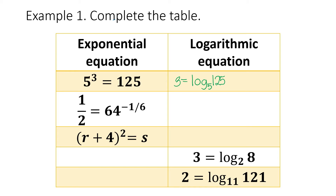Next, we have 1 half equals 64 raised to the negative 1 sixth power. In logarithmic form, this is equal to the exponent, which is negative 1 over 6, equals the logarithm of 1 half to the base 64. So, negative 1 sixth equals logarithm of 1 half to the base 64. We have also proven from this equation that a logarithm can be equal to a negative number.